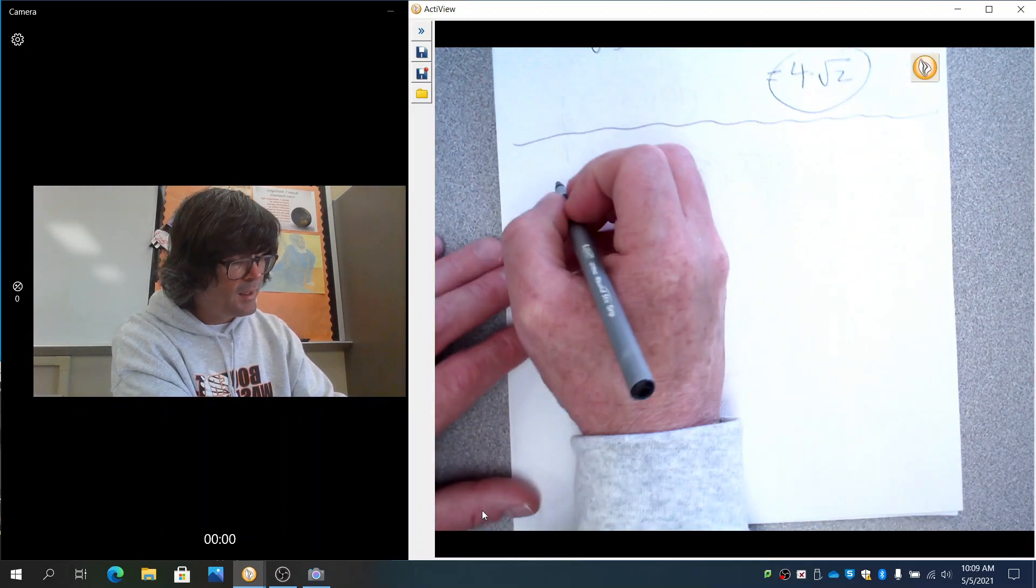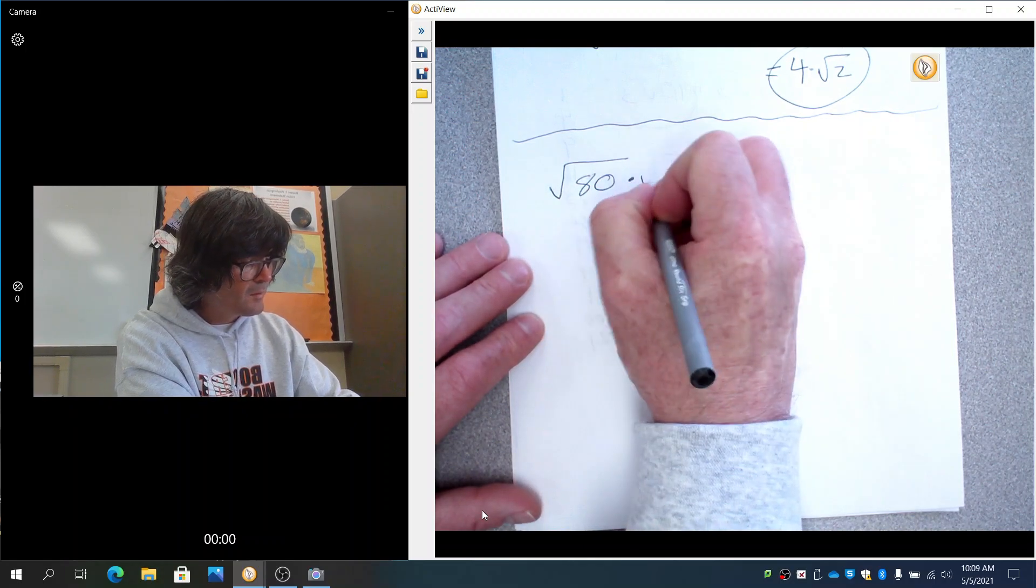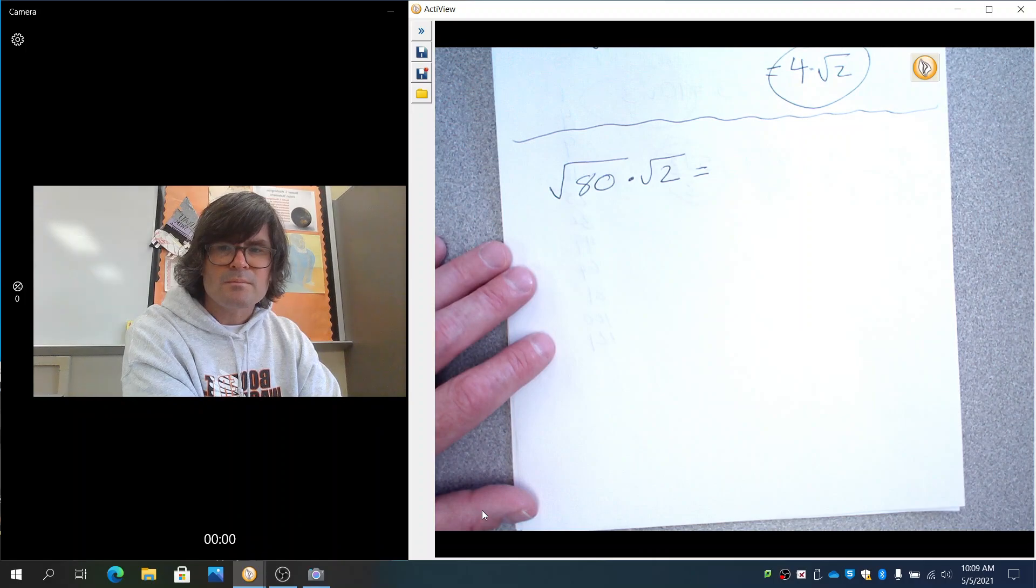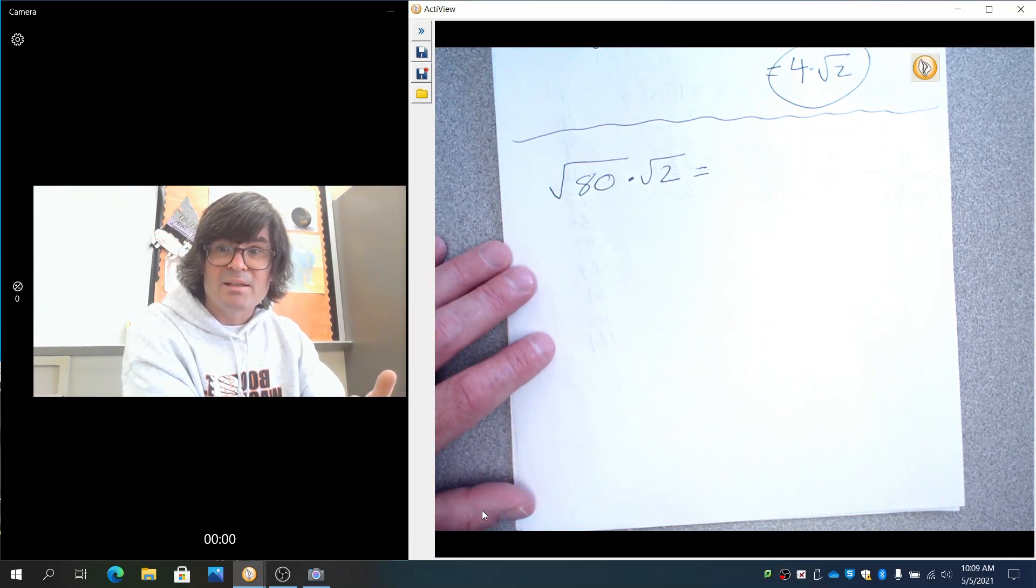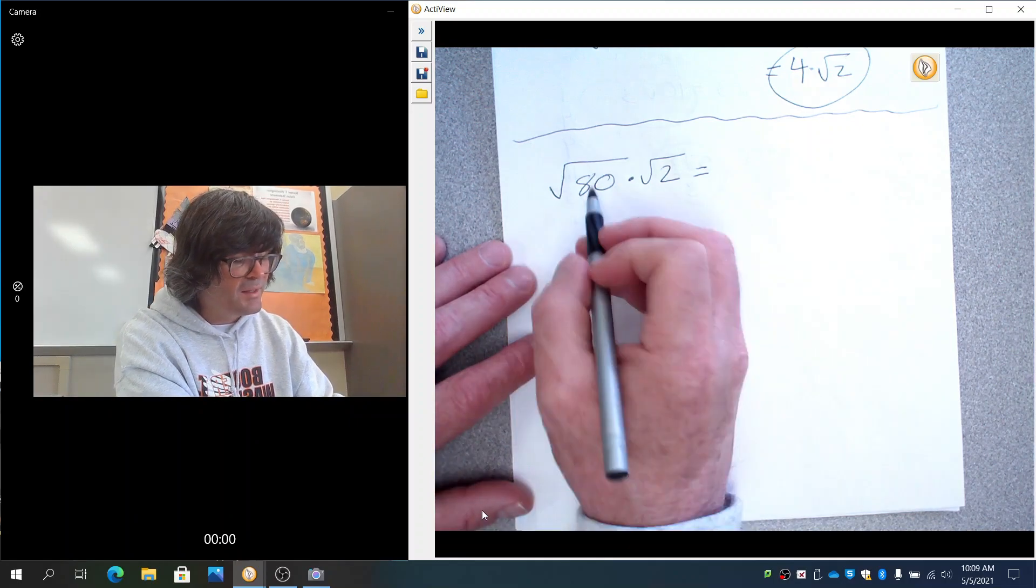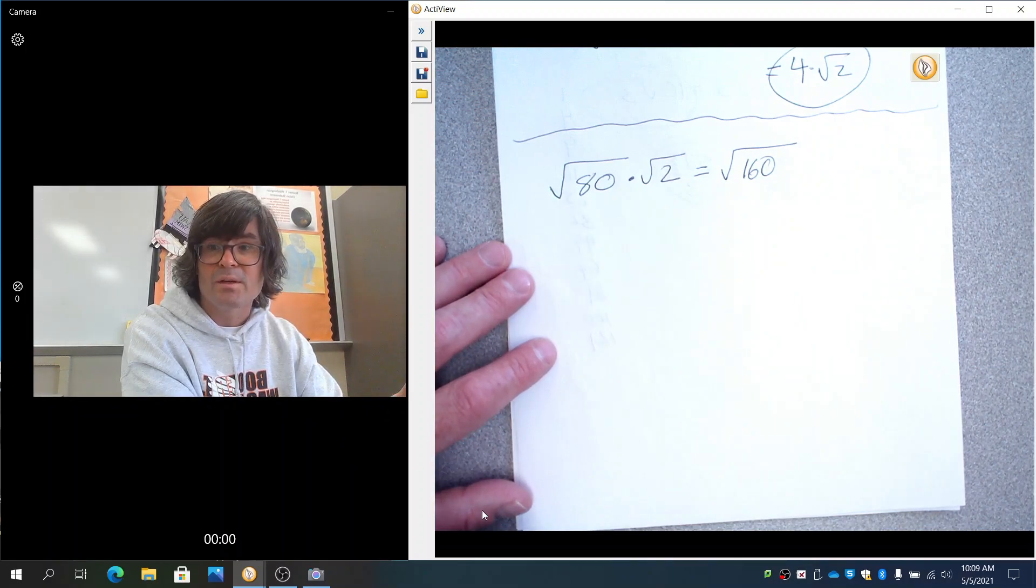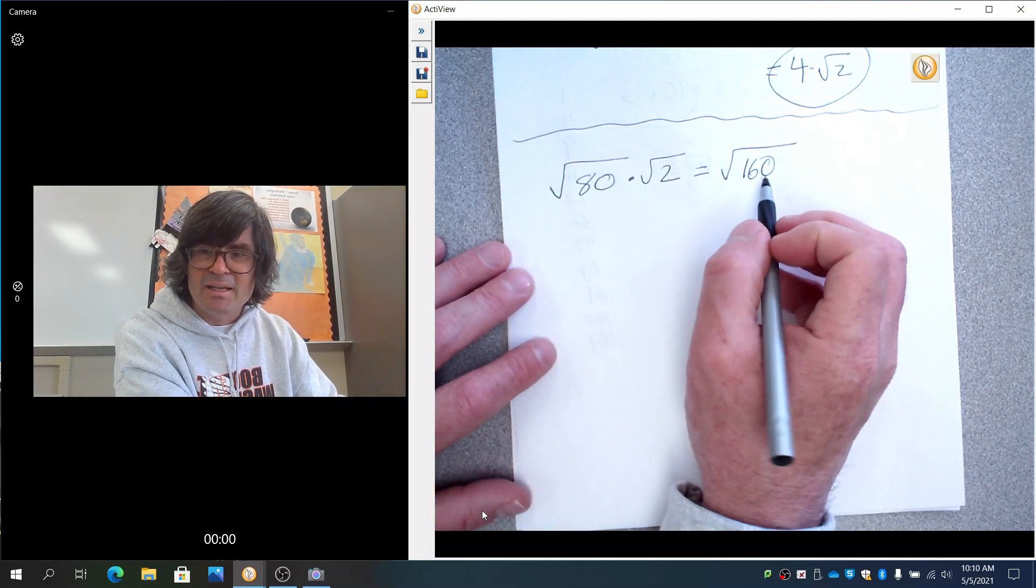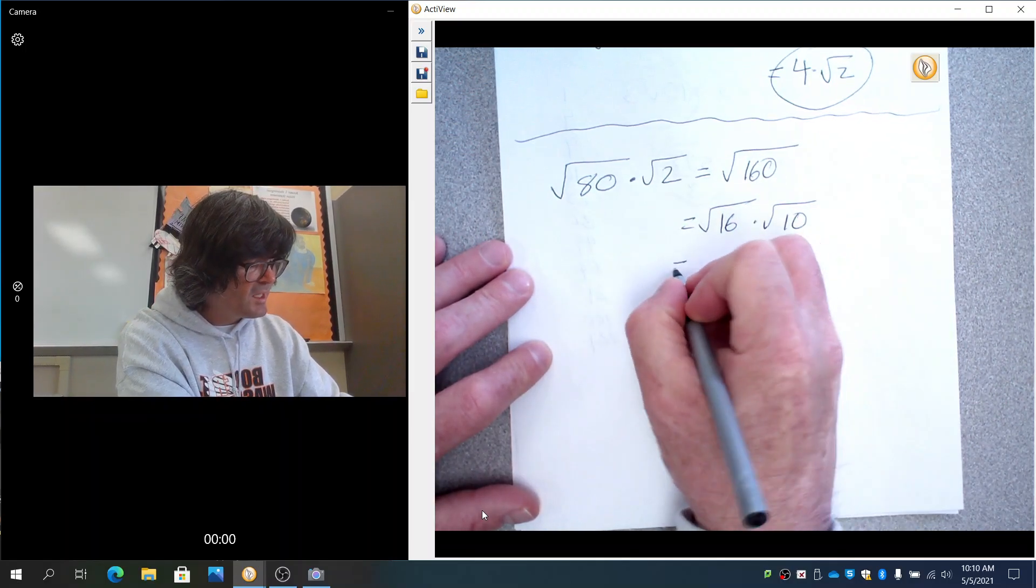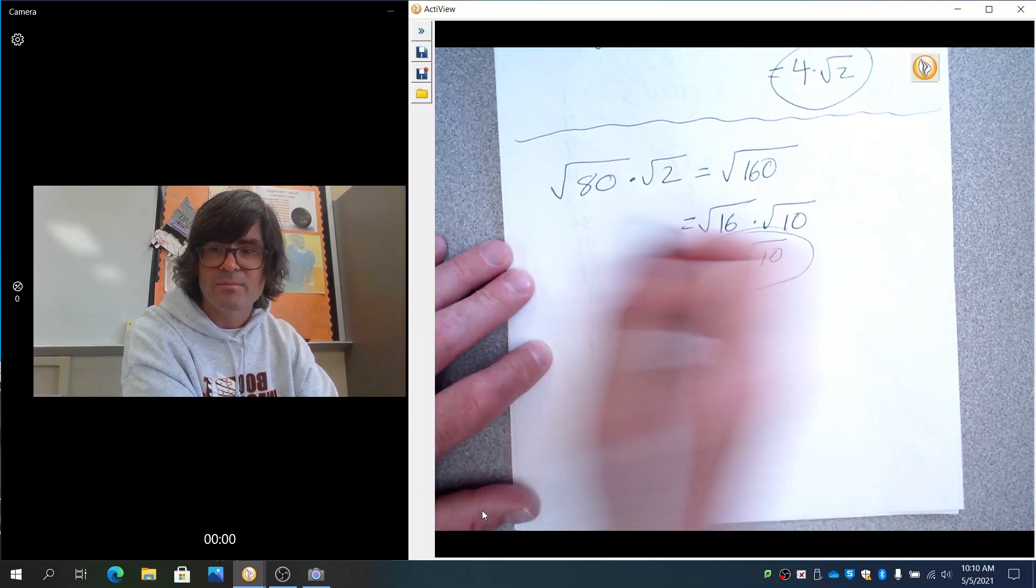Let's do one more: the square root of 80 times the square root of 2. I may not recognize a nice square root that goes in automatically, and you're always welcome to multiply these together and make this the square root of 160. I'm looking at 160, and I notice that's actually 16 times 10. This is going to be the square root of 16 times the square root of 10, which is 4 roots of 10.